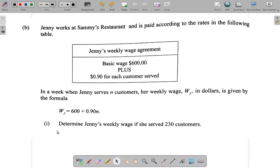Part B1. Jenny works at Sammy's restaurant and is paid according to the rates in the following table. The basic wage is $600 plus $0.90 for each customer served.